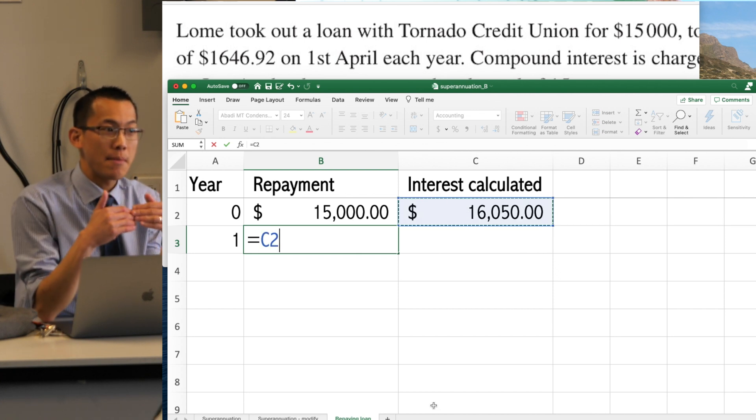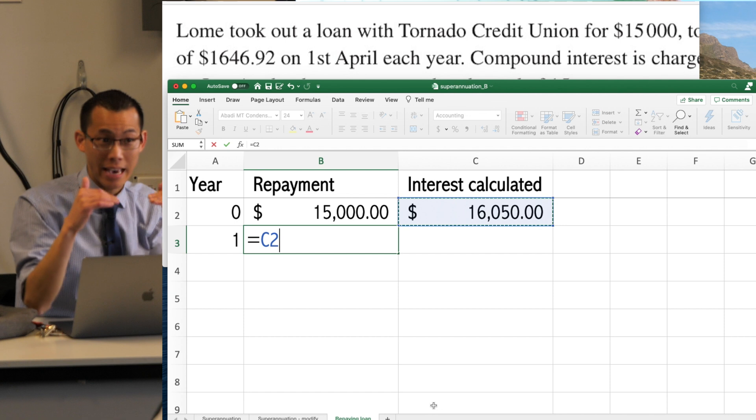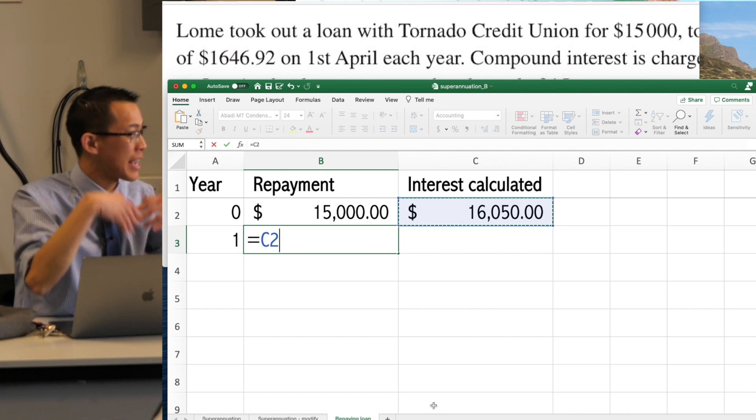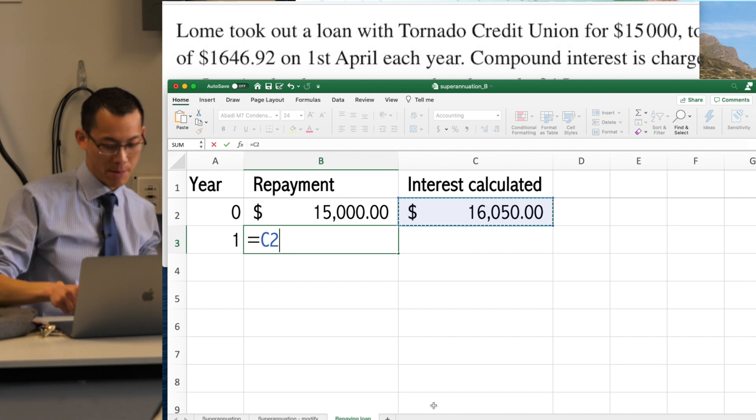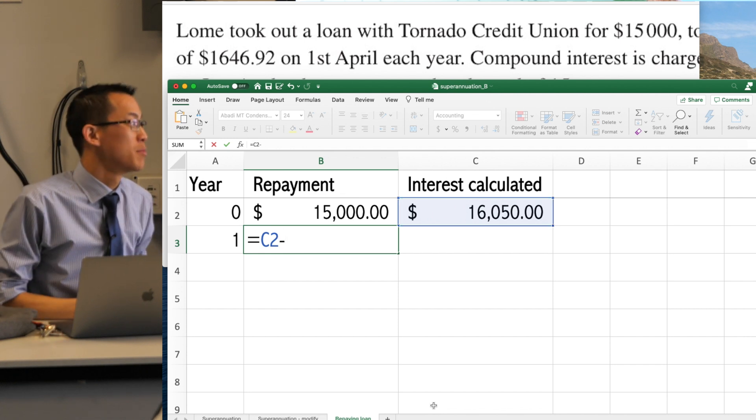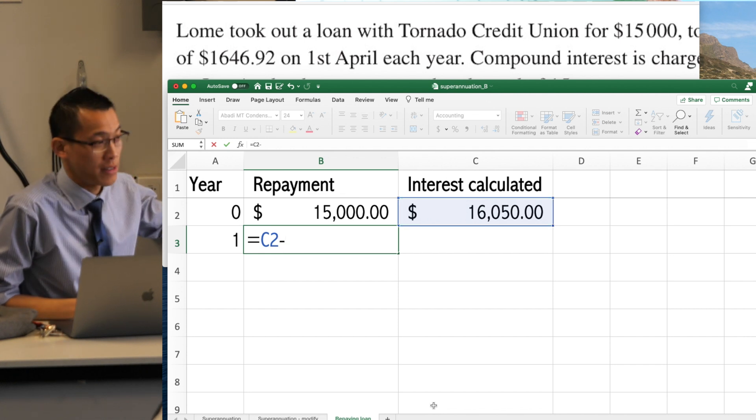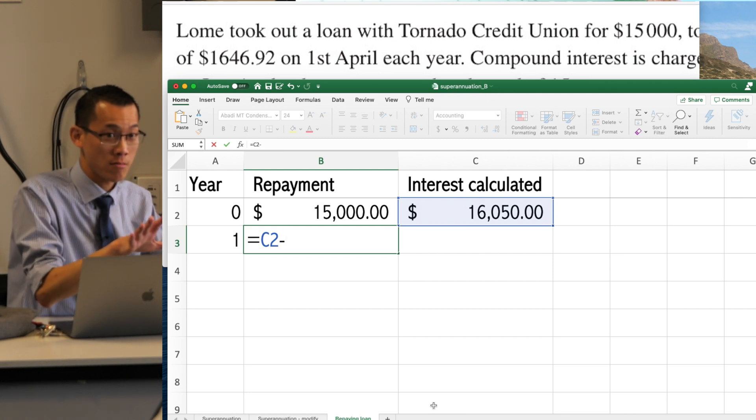so I'm going to take whatever I owed before, that figure there, and because I'm making a repayment, I'm reducing how much is owed, right? So remember last time I was adding on, my superannuation is getting bigger and bigger and bigger. I don't want this to get bigger and bigger and bigger. I want it to get smaller and smaller and smaller. So that's why I've got a minus sign, I'm subtracting. Are you with me?